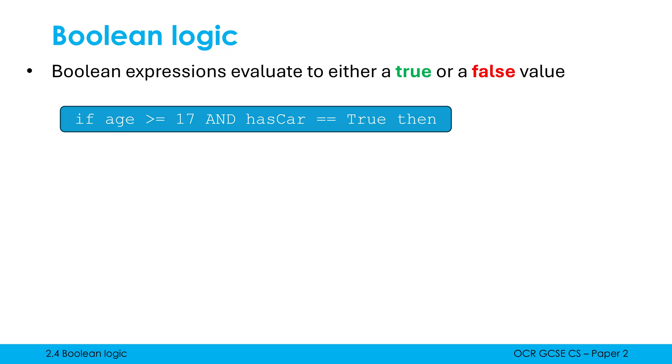With conditions in if statements and while loops, we use these Boolean expressions. So here is an if statement. The whole thing isn't a Boolean expression, but we've got a Boolean expression within it. With if statements, we need our condition to be Boolean for it to work. So this whole thing is an example of a Boolean expression because it's either going to be true or false.